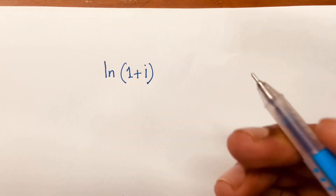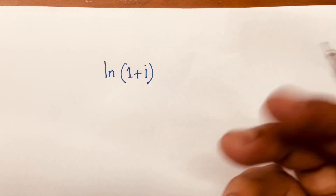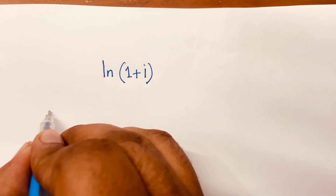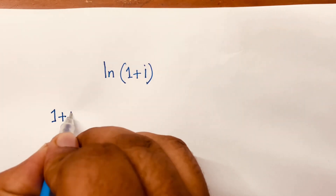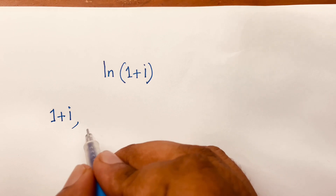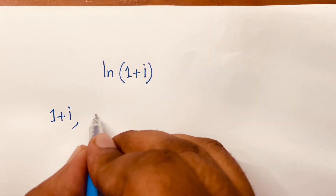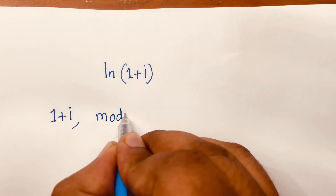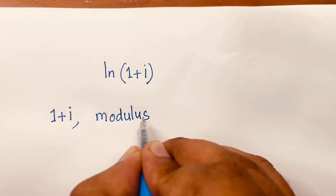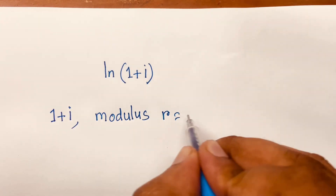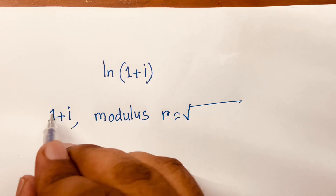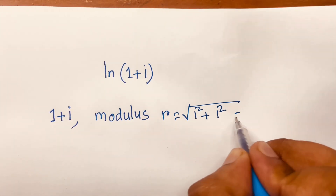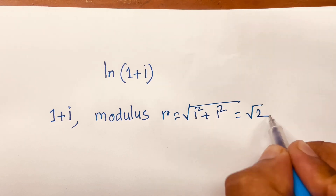How to solve ln(1+i)? So here is 1+i. First of all, I can say 1+i — we will find out the modulus and argument. So modulus is r = square root of 1² + 1², which gives us square root of 2.